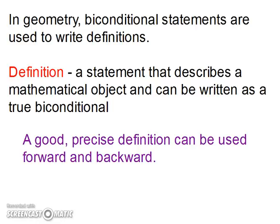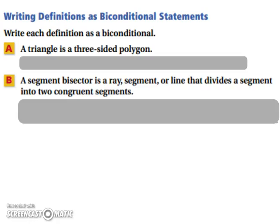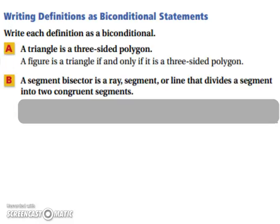In geometry, bi-conditional statements are used to write definitions. A definition is a statement that describes a mathematical object and can be written as a true bi-conditional. A good, precise definition can be used forward and backward. For example, a triangle is a three-sided polygon can be written as: a figure is a triangle if and only if it is a three-sided polygon.